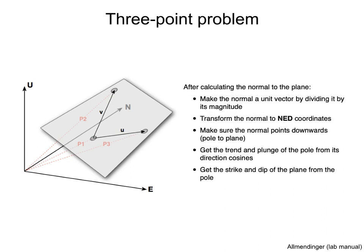After calculating the normal to the plane using the cross product, we need to do some additional operations. First, we need to make the normal vector a unit vector by dividing each of its components by the magnitude of the vector. Then, we need to transform this unit vector to north, east, down coordinates. Then, we need to make sure the vector points downwards. The direction cosine with respect to the down axis, cosine gamma, should be positive. Then, we can get the trend and plunge of the downward normal, which is the pole, from its direction cosines. We saw how to do this in lecture 3. Finally, we can get the strike and dip of the plane from the trend and plunge of the pole. We saw how to do this in lecture 2.